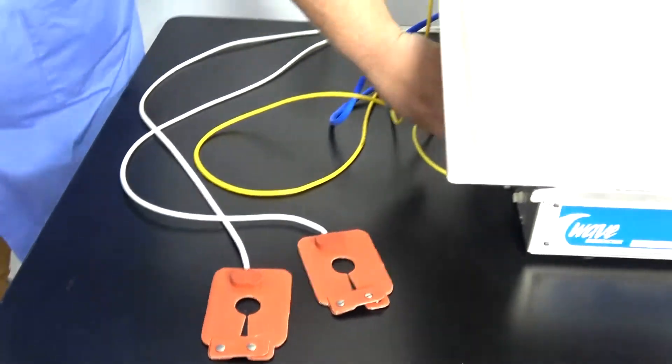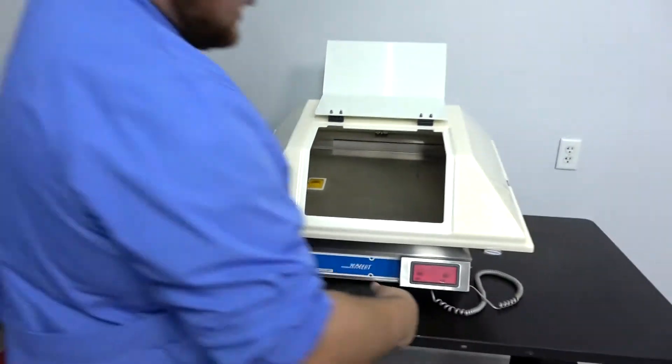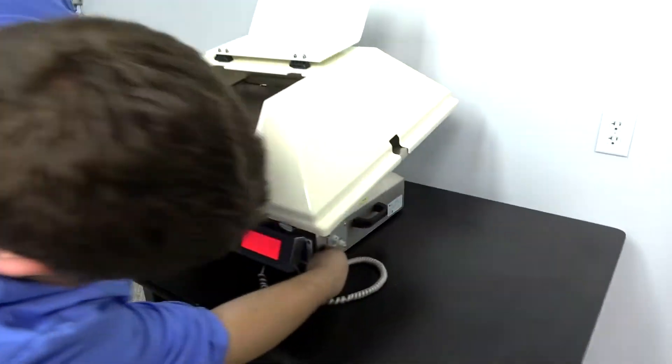Right down here, you can see you have your air inlet and outlet, and on the other side, we have the CO2 inlet and outlet, right here.